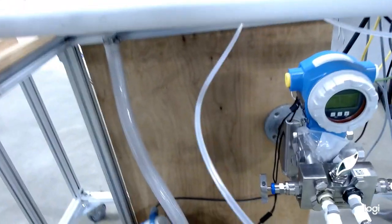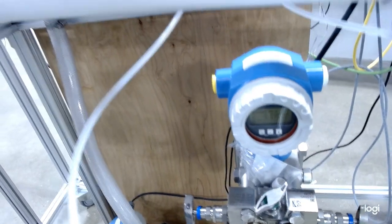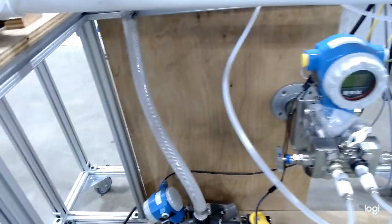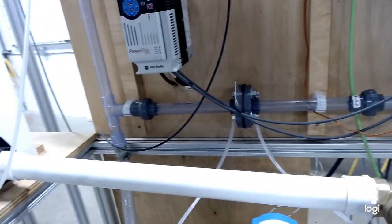Now you can see that we have a high side and a low side port here on this DP transmitter and they're actually connected up here to each side of this orifice plate.